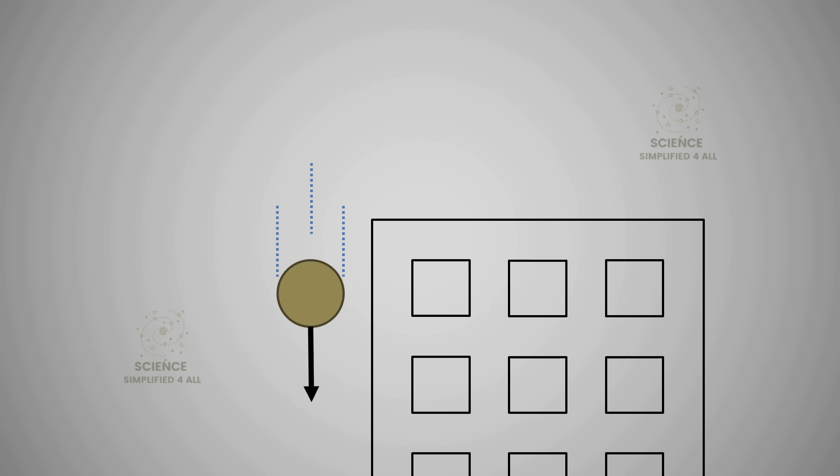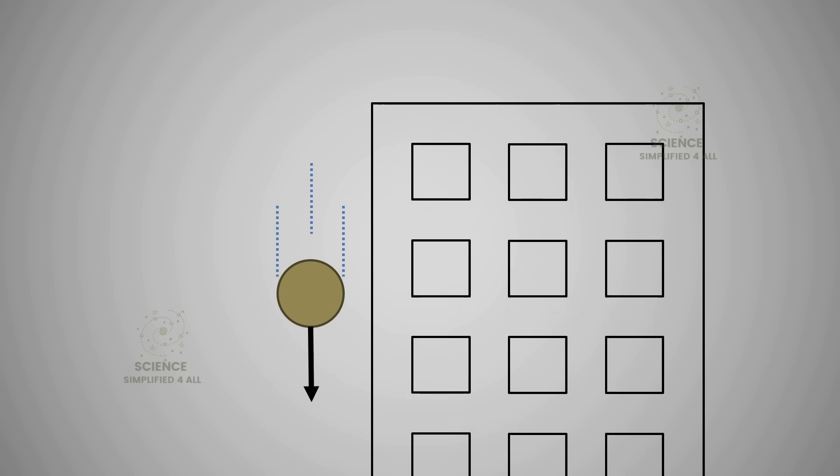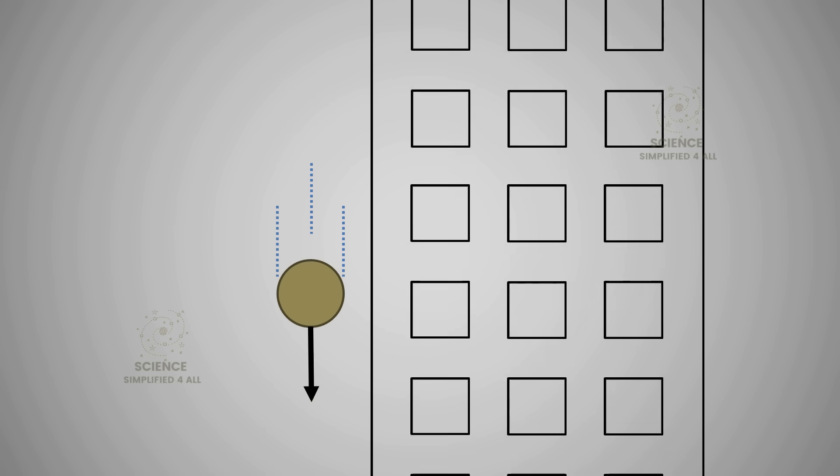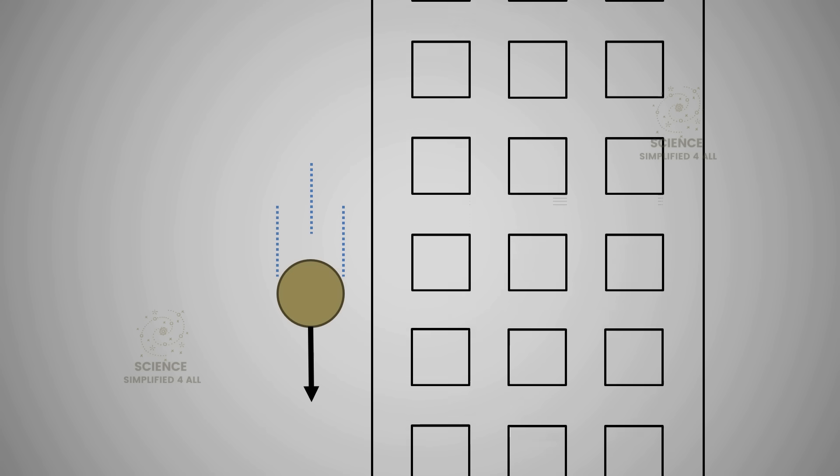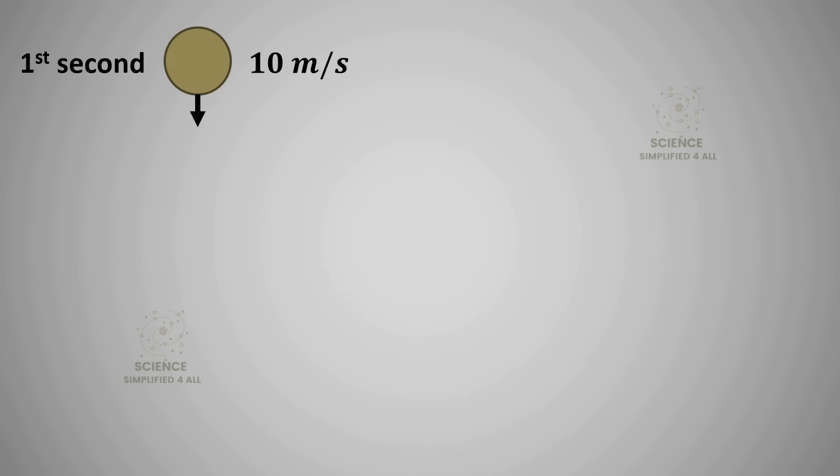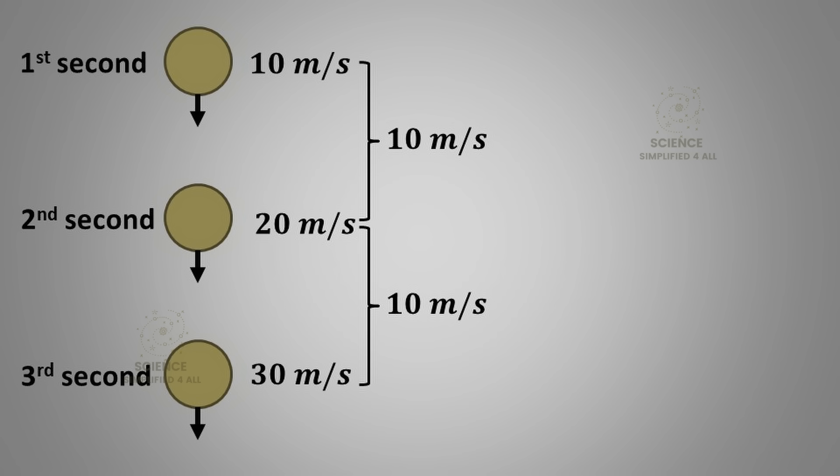It means that any object falling freely towards Earth will gain speed at a rate of 10 meters per second for every second it falls. Let us take an example. Imagine dropping a 1 kilogram iron ball from the top of a tall building. As it falls, its speed keeps increasing. After 1 second, its speed will be 10 meters per second. After 2 seconds, it will be 20 meters per second. After 3 seconds, it will be 30 meters per second.